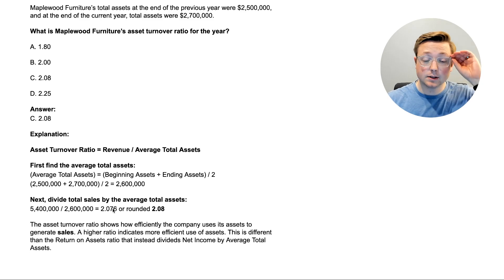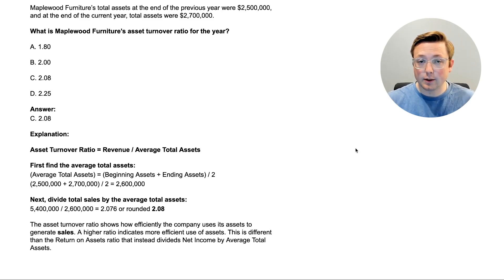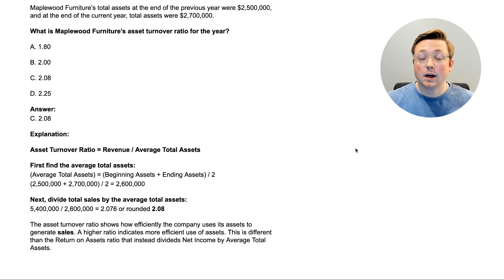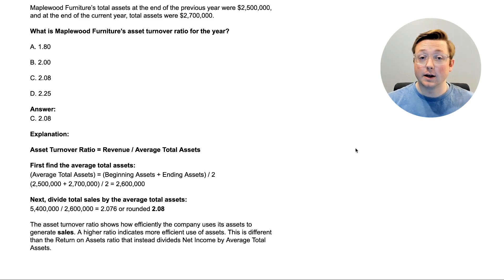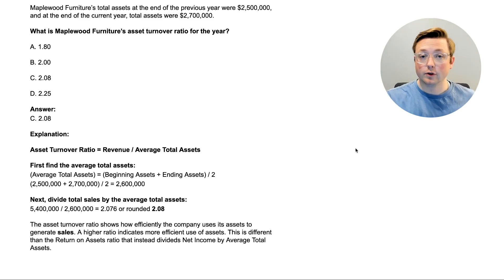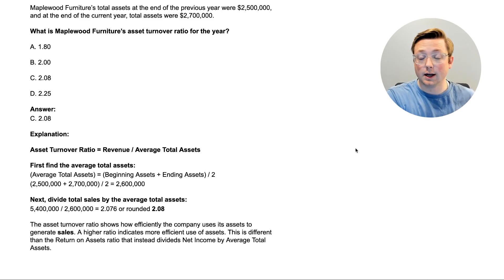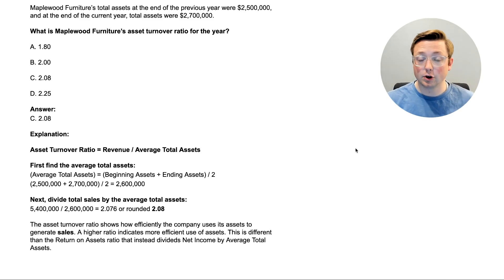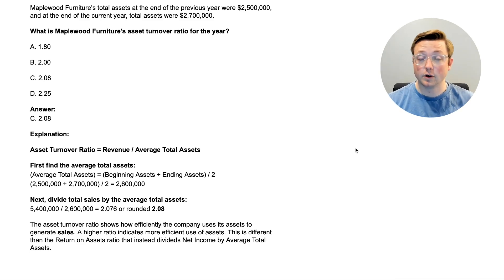The asset turnover ratio shows how efficiently a company uses its assets to generate sales. This is different from return on assets: return on assets uses net income over average total assets to measure how effectively assets generate profit after expenses. Asset turnover uses revenue — it's not taking any expenses into account, just how well assets drive sales. Remember that distinction.